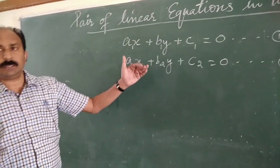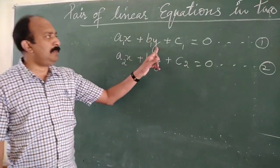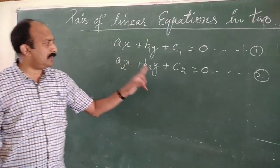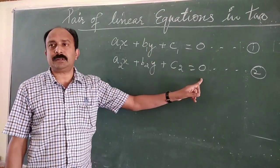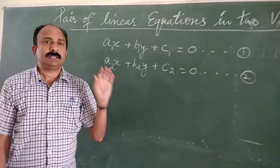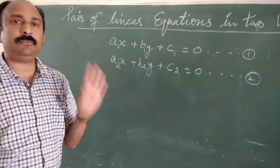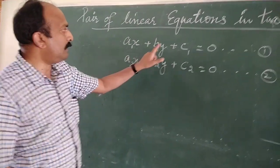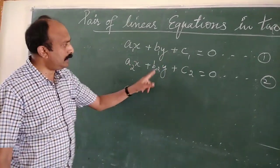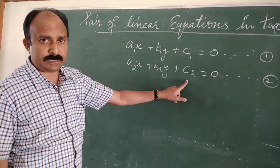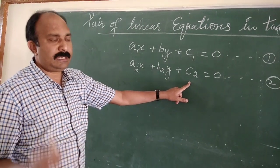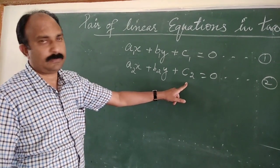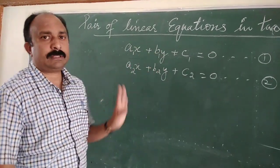I repeat: A1X plus B1Y plus C1 equal to 0, and A2X plus B2Y plus C2 equal to 0, are the standard form of pair of linear equations in two variables, where A1, A2, B1, B2, C1, C2 are the constants — they can have any real value — and X and Y are the variables.